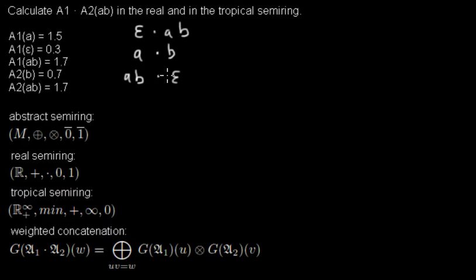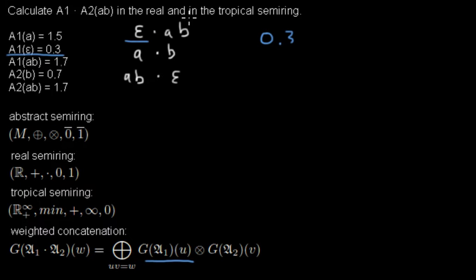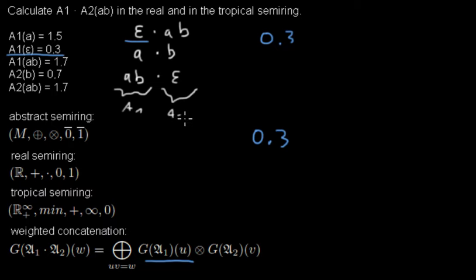Keeping this in mind, for the tropical semi-ring let's start with this weight. I can do them in parallel. First we need the epsilon weight in the first automaton, which is 0.3. I will write the calculation for the real semi-ring in the upper part and for the tropical semi-ring in the lower part. So this is 0.3 for epsilon in A1. And I need the weight of AB in A2, which is 1.7.